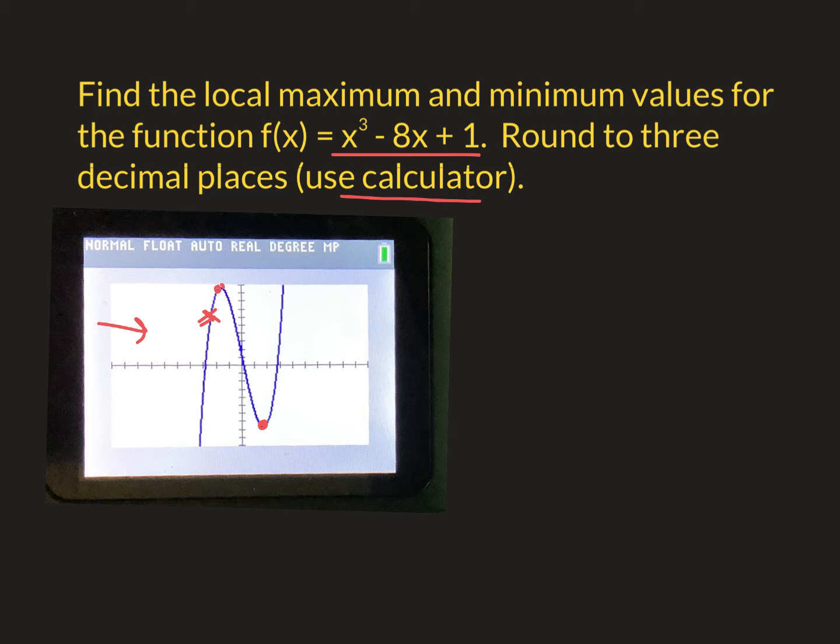Then it says right bound. I'm going to trace to the right side. Hit enter. There's my right bound. Then the calculator says guess. Hit it one more time. And it tells me what the min is.